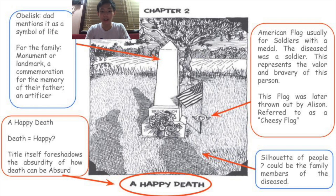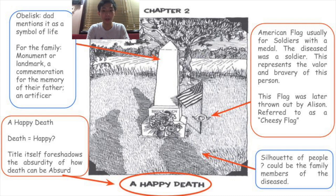The obelisk also represents the life of her father as an artificer because he was always so keen and stuck with extravagant furniture and accessories. Looking at the title itself, it's called A Happy Death, which is already one big irony because how could death be happy — it gives us a glimpse of the absurdity of death, a prominent concept throughout the chapter. There is also an American flag right beside the obelisk, which is usually placed on soldiers' graves to symbolize honor. This flag will later be thrown out by Alison, who called it a cheesy flag, as if her father never lived up to those ideals. There are also some shadows which could be the family of the deceased.